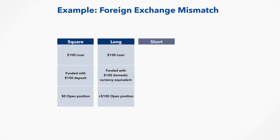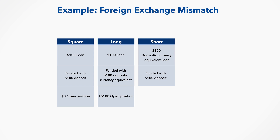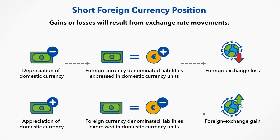The bank could also have a short position in foreign currency. If the bank raises $100 in foreign currency denominated deposits and uses the funds to purchase domestic currency, this results in a short foreign currency position. The bank has $100 more in foreign currency denominated liabilities than its zero position in foreign currency denominated assets. With a short foreign currency position, the gains or losses from exchange rate movements are opposite to the long position just discussed.